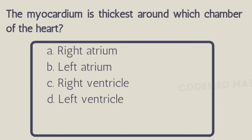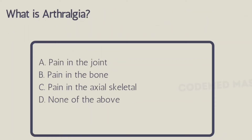Next question: the myocardium is thickest around which chamber of the heart? Option A: right atrium, Option B: left atrium, Option C: right ventricle, Option D: left ventricle. The right answer is Option D, left ventricle. The left ventricle has to pump blood into the vessels which carry blood to the whole body, so it pumps at higher pressure compared to other heart chambers, giving it a higher workload. Therefore, the myocardium is thickest around the left ventricle.